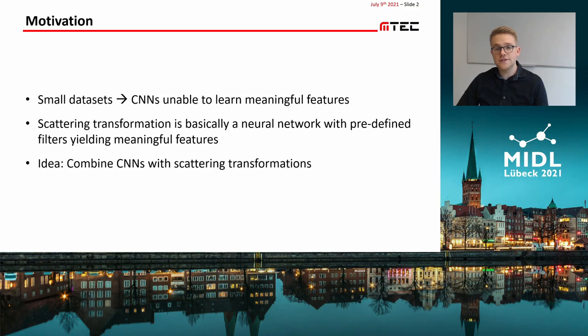When we train CNNs with limited data, the learned filters turn out to be rather inefficient and unable to extract meaningful features. Scattering transformations are convolutional neural networks with predefined filters and have proven to be able to extract meaningful features for natural image classification.